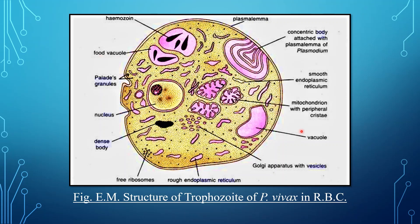One or two double membrane vacuoles of unknown function also appear in the cytoplasm. Double membrane concentric bodies are also found in the cytoplasm, attached with the plasmalemma. It appears that the concentric bodies originate from the plasmalemma. This concludes the electron microscopic structure of the trophozoite of Plasmodium vivax.